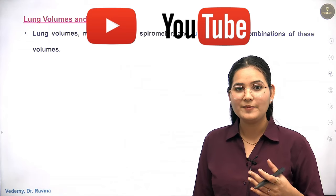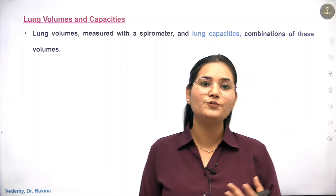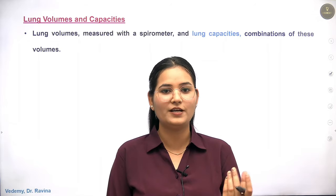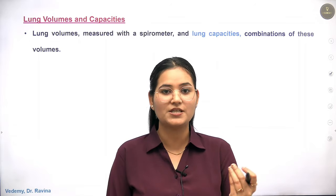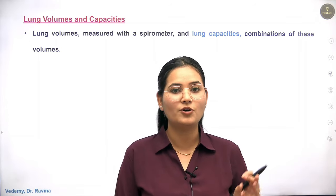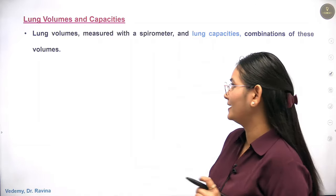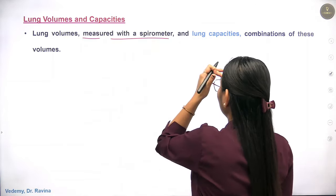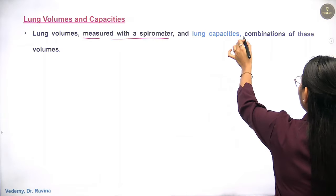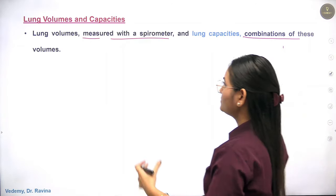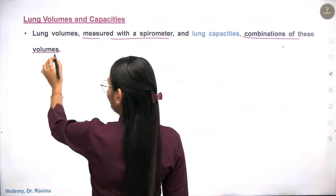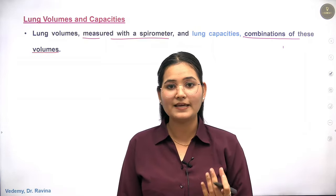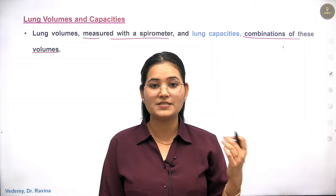I will give you a basic introduction of Lung Volume — how to measure it, and which machine you can use to measure volume or capacity properly. Lung Volume is measured with a spirometer. Lung Capacity is a combination of these volumes. When you talk about volume, you talk about a smaller thing, but capacity is always maximum.